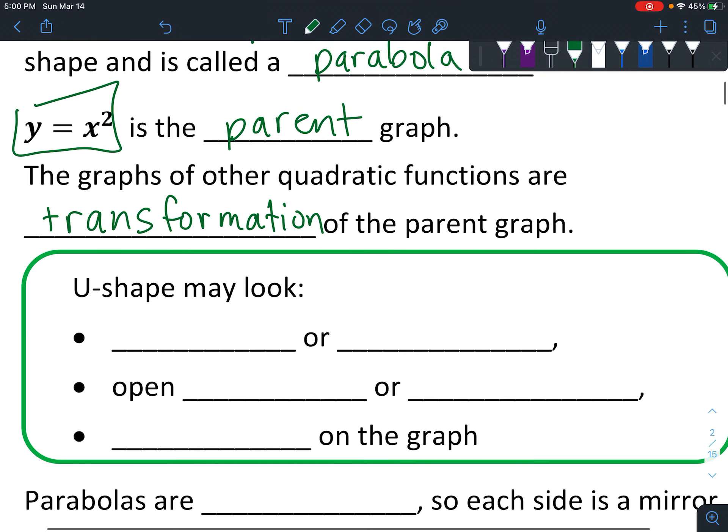So the U-shape may look thin - you'll notice once again these are in quotation marks because it's not a technical term, kind of a generic term. So the U-shape might look a little thinner or a little wider, it might open up or it might open down, or it might just be moved on the graph.